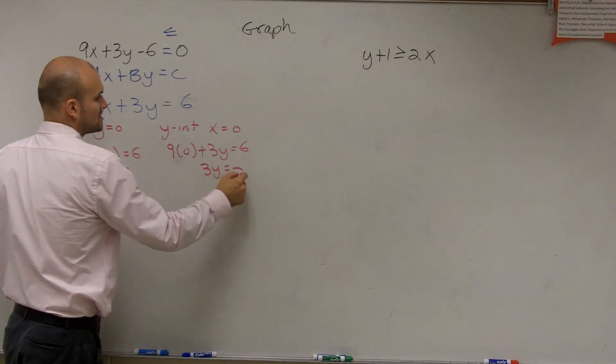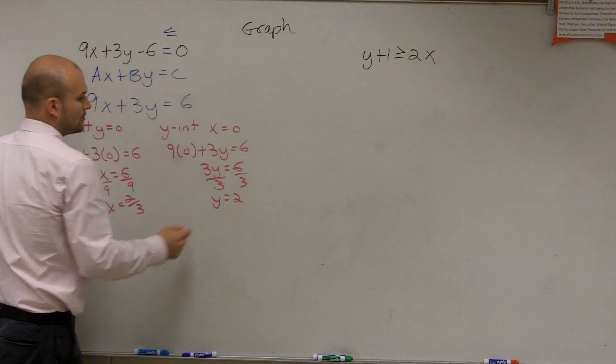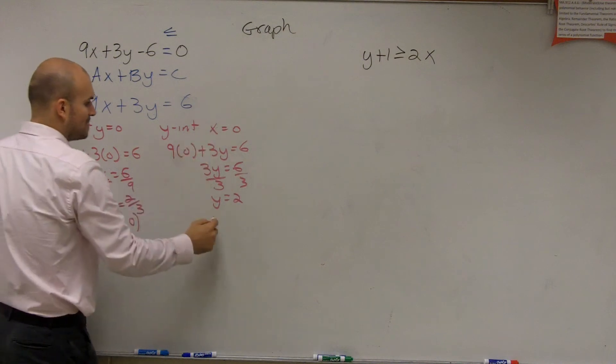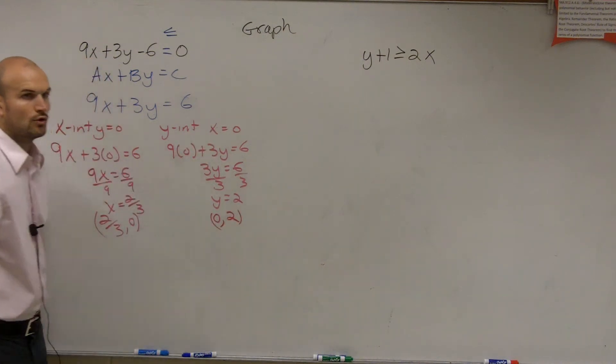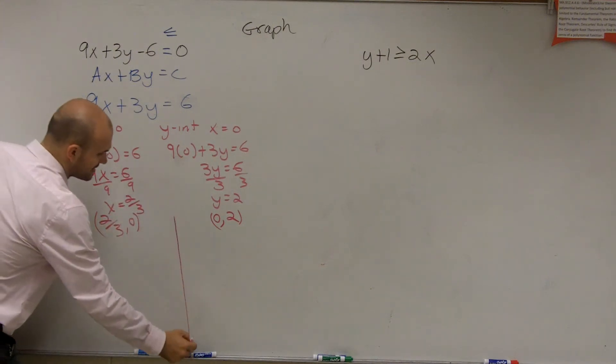Here, I get 3y equals 6, divide by 3, y equals 2. So ladies and gentlemen, what happens when x equals 2 thirds and y equals 0? You now have a coordinate point, which we call the x-intercept. When you have a coordinate point when 0, x equals 0 and y equals 2, you now have a coordinate point for the y-intercept. So what we do is we plot these two points.